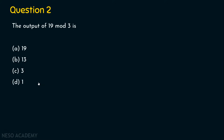Let's solve this now. We have the question as 19 mod 3. So 19 must be divided by 3 — what will be the remainder? When we divide 19 by 3, 3 times 6 is 18, and the remainder is 1. So the right answer for question number 2 is option D, 1.